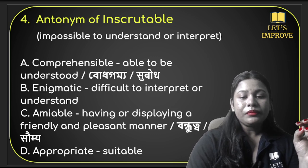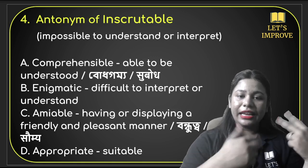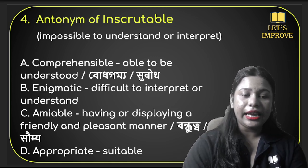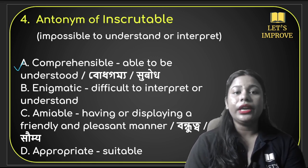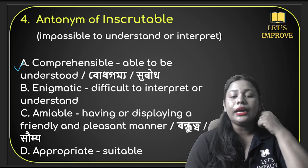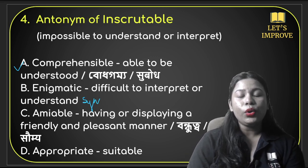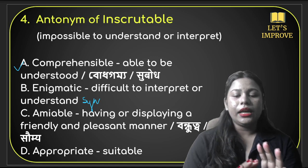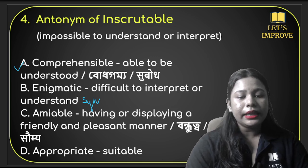Comprehensible means able to be understood. So inscrutable means you cannot understand it, and comprehensible means you can — they are antonyms. Therefore, option A, comprehensible, is the answer for antonym of inscrutable. Enigmatic means difficult to interpret or understand — that is a synonym of inscrutable. Amiable means friendly, and appropriate means suitable.